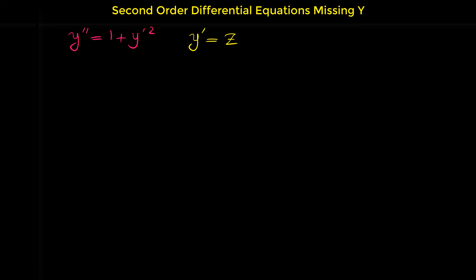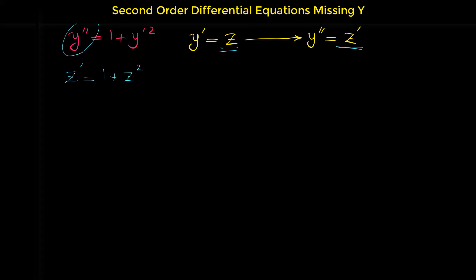We know how to solve first order differential equations. If we suppose y prime to be z and take the derivative from both sides of this relation, then y double prime is z prime. Now if we replace y double prime with z prime and replace y prime with z, we get this differential equation: z prime equals 1 plus z squared.